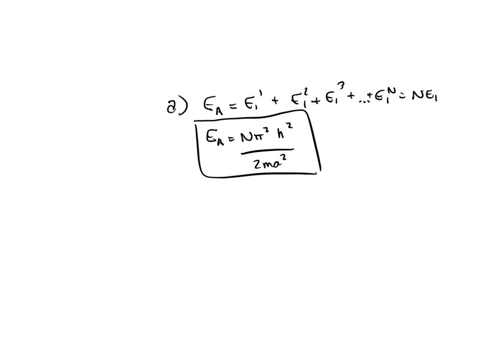Then for b, we have e sub b equal to n plus 1 to n plus 1 over 6n, pi squared h squared divided by 2m a squared.